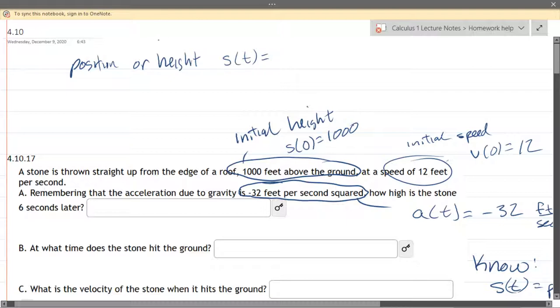Whenever I see s of t I think speed however that's wrong, you should think of position. The derivative is the velocity. Now if you're wondering what about speed, speed is the absolute value of velocity.